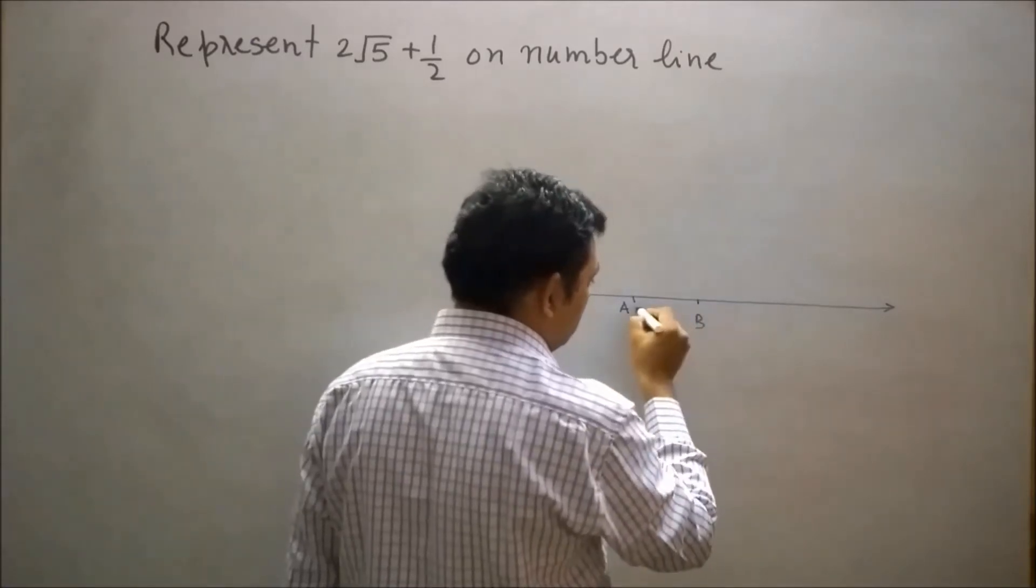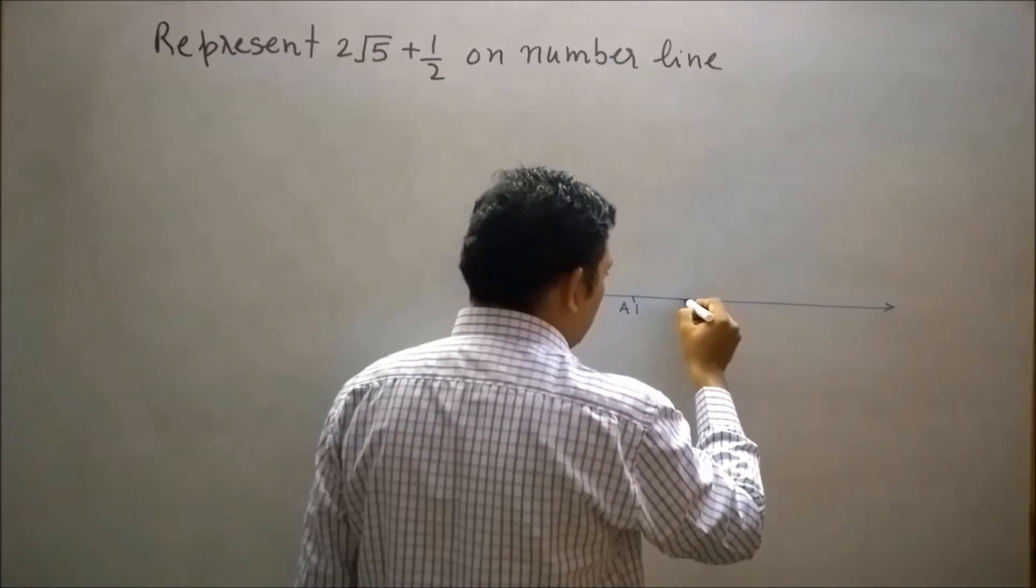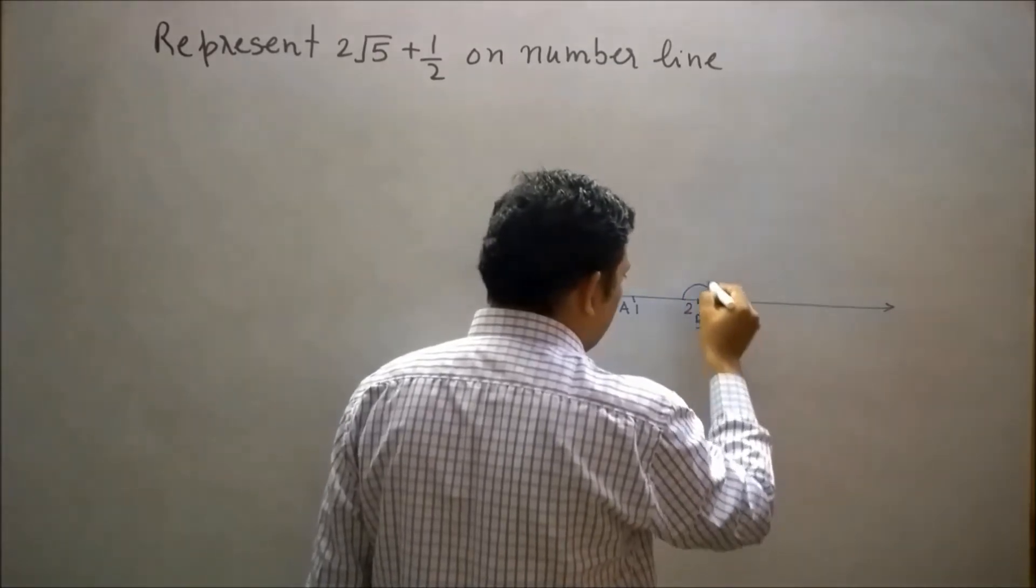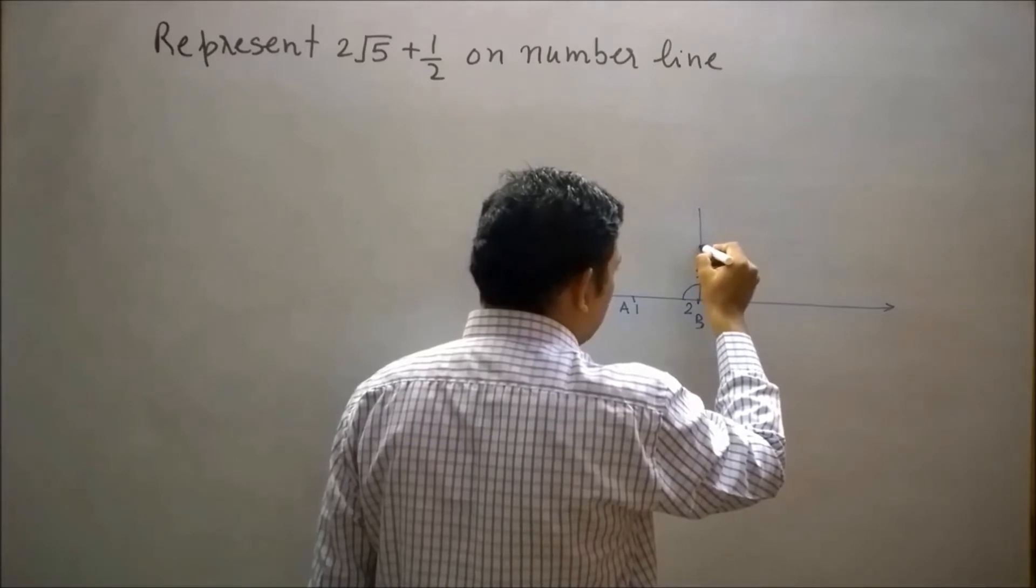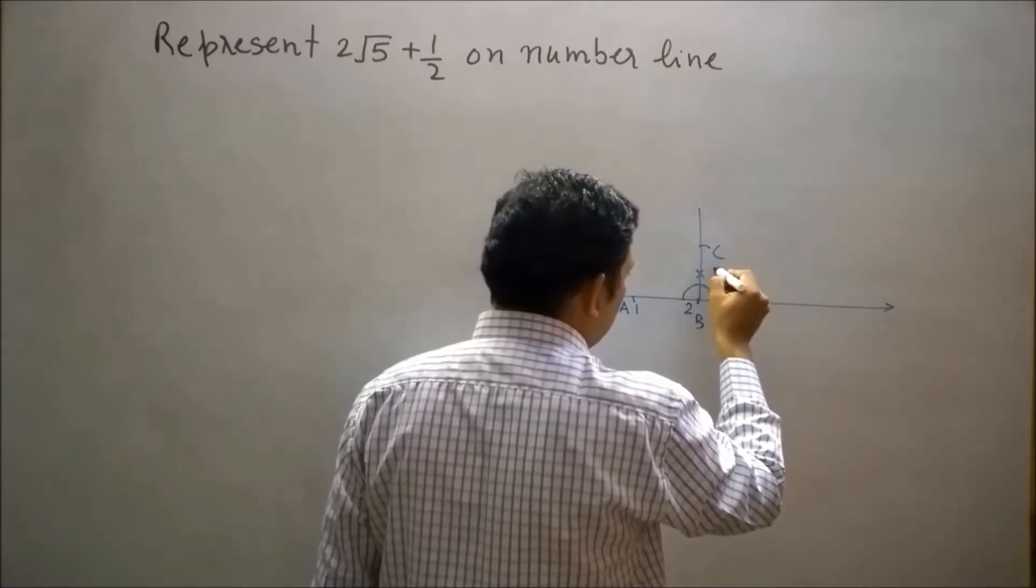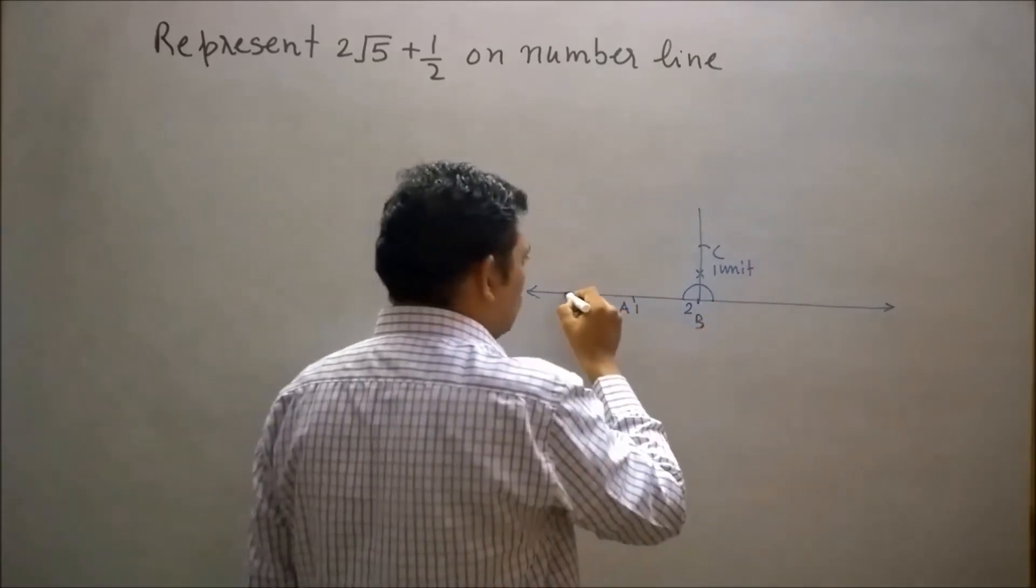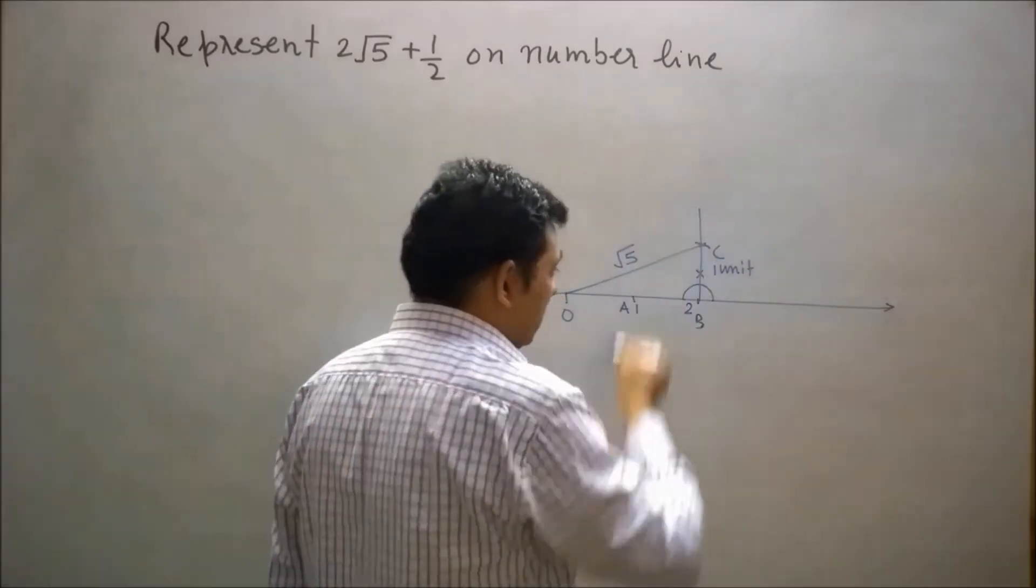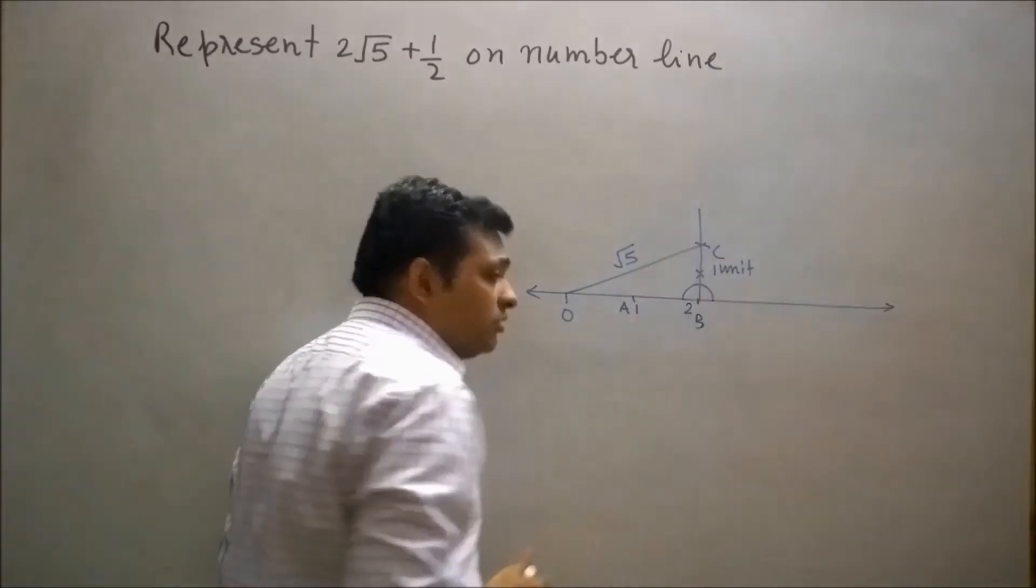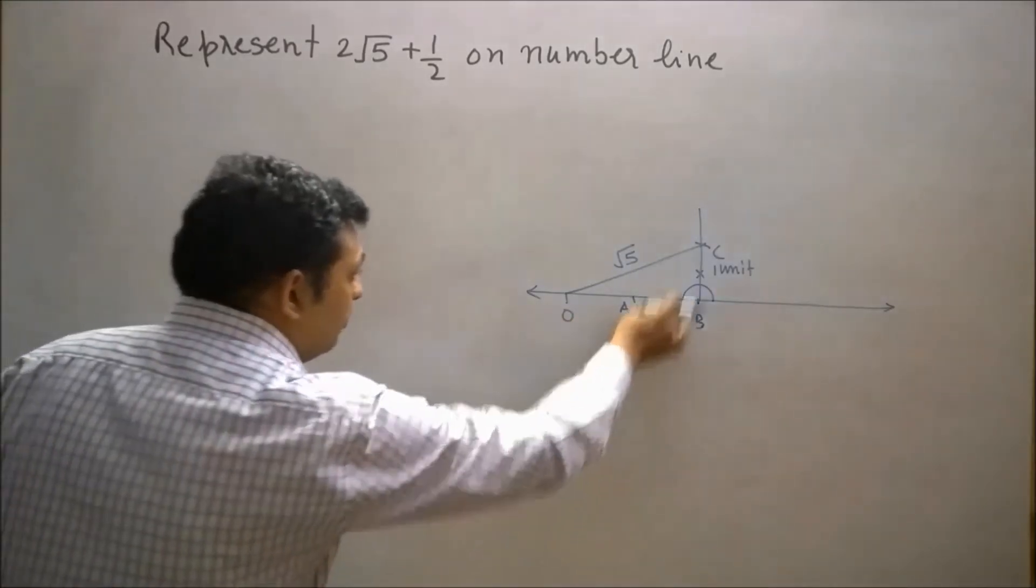Now draw a perpendicular on OB as BC. Let's say BC is one unit distance. Now join O to C. This will be √5. Let's try to understand why OC is √5. Now consider right angle triangle OBC.